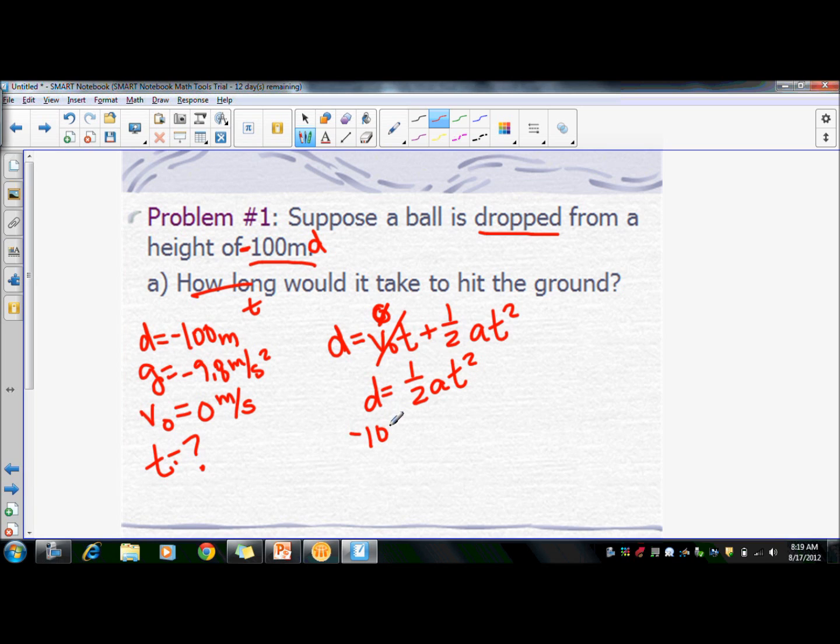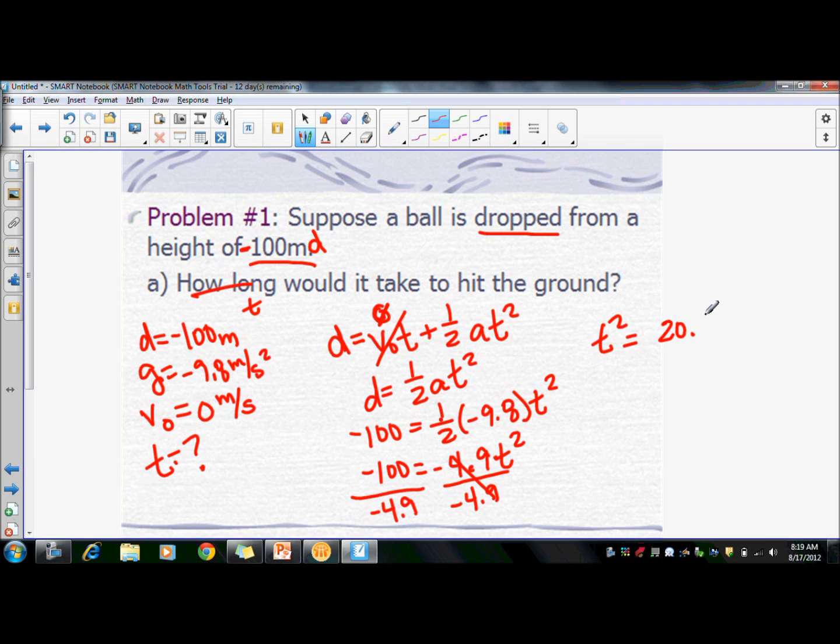So we have negative 100 equals one-half times negative 9.8 times t squared. So let's go ahead and do our half here. So negative 100 equals negative 4.9 times t squared. And so we're going to divide by negative 4.9 both sides.